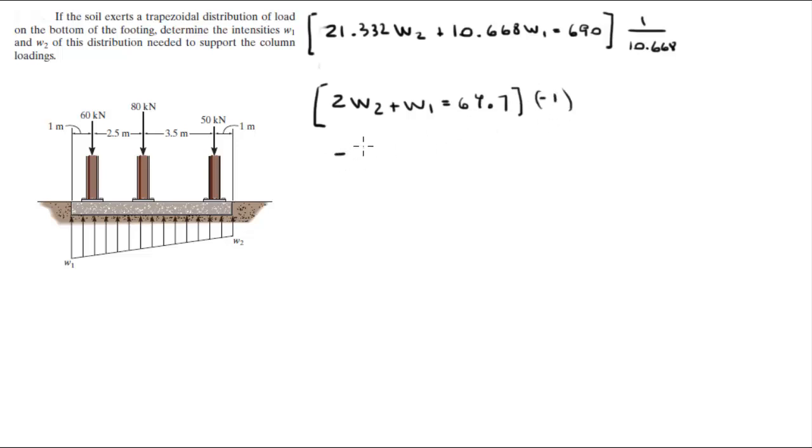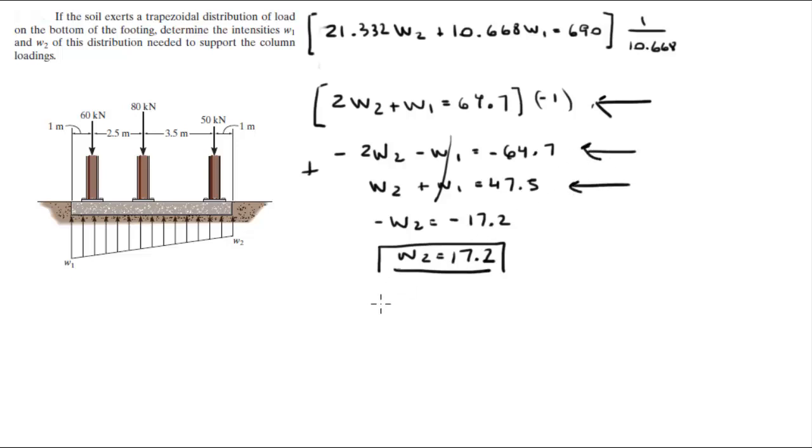Let's multiply this by negative 1 and you get minus 2W2 minus W1 is equal to negative 64.7. Remember the other equation that we got: W2 plus W1 is equal to 47.5. The W1's cancel out when you add these two equations together and you get minus W2 is equal to minus 17.2, so W2 is equal to 17.2. Yay we got W2! Now to find W1 just plug it into any equation. W1 is going to come out to be 30.3 kilonewtons per meter.